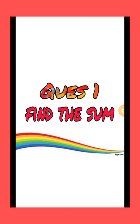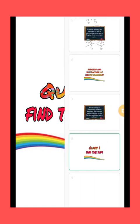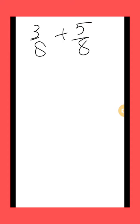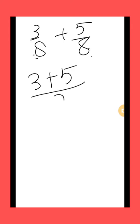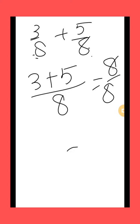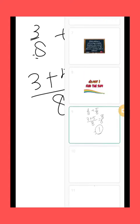So let's start with the questions. Your first question is: find the sum of 3 by 8 plus 5 by 8. In this question the denominators are same, which means they are like fractions. So first of all add the numerators — 3 plus 5 — keeping the denominator same, that is 8. 3 plus 5 is 8 by 8; dividing 8 by 8 our answer will be 1.